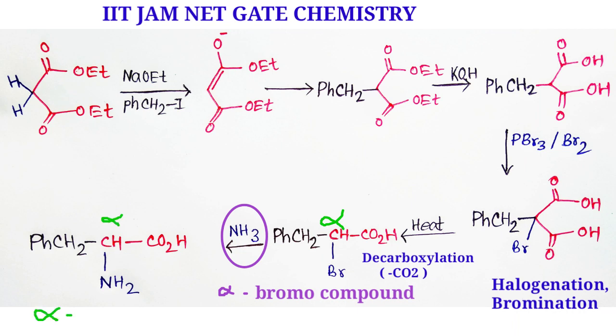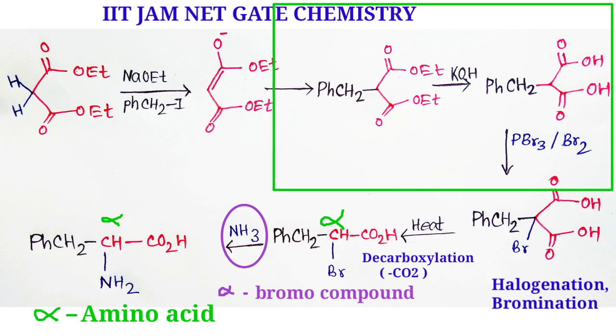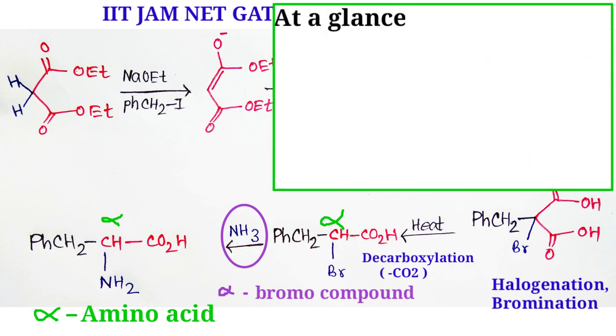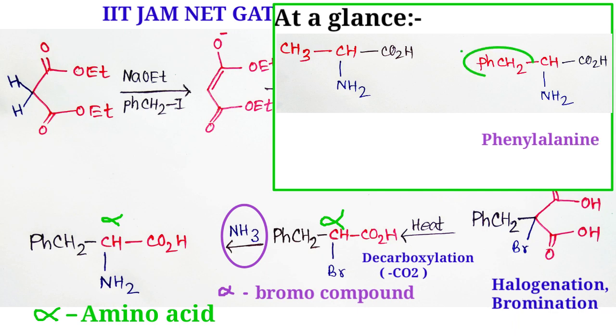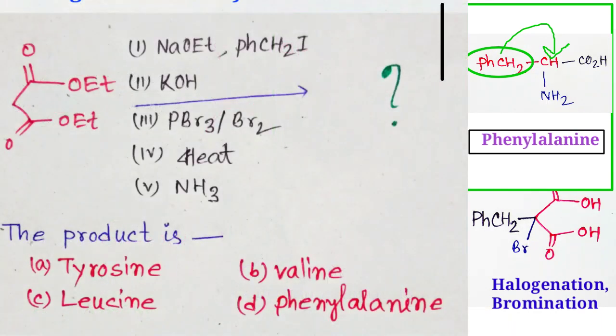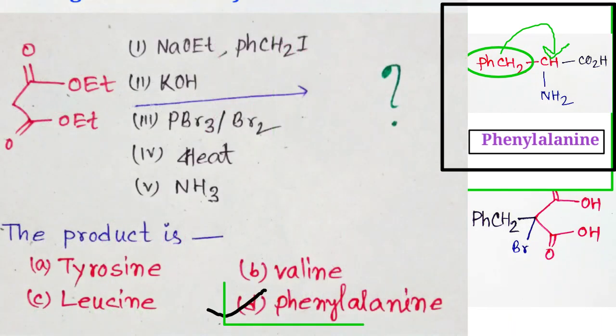Finally, attack with ammonia molecule will give alpha amino acid, and this is the structure of phenylalanine, where benzyl group is substituted with the methyl group of alanine. Here is the structure of alanine and phenylalanine. So the correct answer is option number four, that is D.